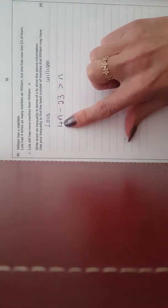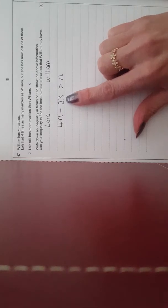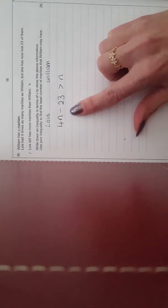William has N marbles. So this side represents William. Lois has four times as many as William but has now lost 23. We now have an inequality which we need to solve.